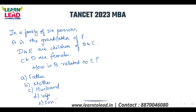In a family of 6 persons, A is the grandfather of F. First, we have to draw a family diagram. A is the grandfather — there is a generation gap, meaning father and mother is one generation. A is the grandfather, so A is male. A positive symbol represents the male.